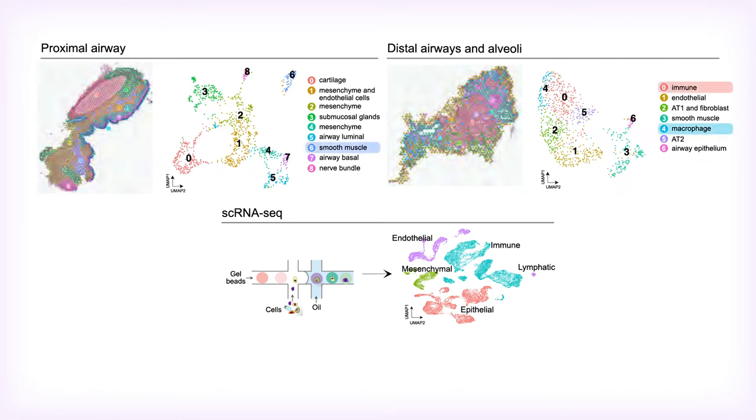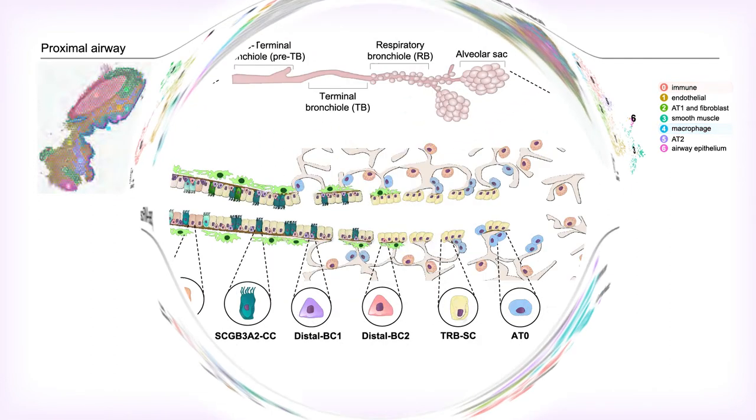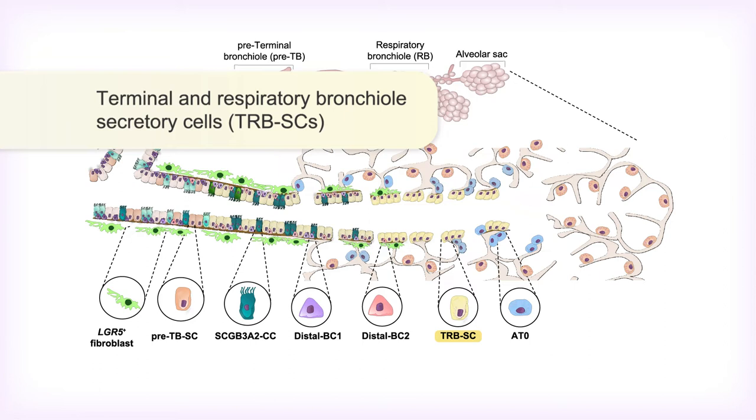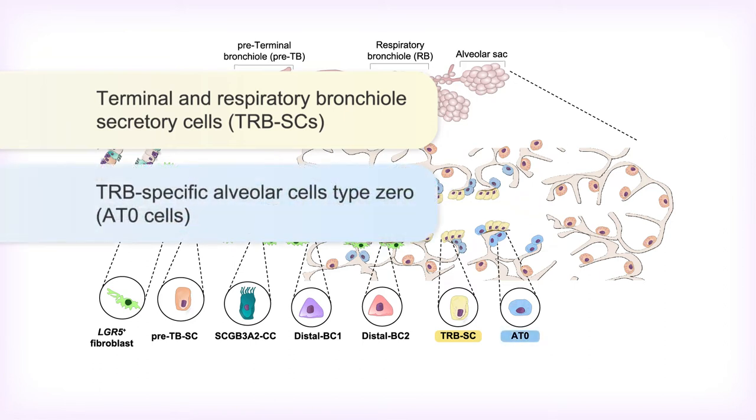While many types of cells were found to be well-known, some appeared to be entirely new. Among these were cells labeled terminal and respiratory bronchial secretory cells, or TRBSCs, and TRB-specific alveolar cells type 0, or AT0 cells.